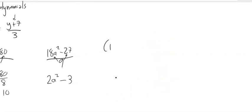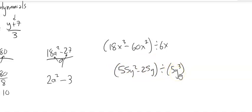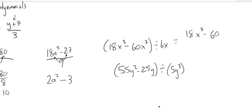Sometimes we'll write division with a division sign. Notice in both of these cases we're using parentheses — they're grouping the two terms together. So this whole thing is being divided by 6x, and this whole thing is being divided by 5y³. I'll write that as a fraction as well because it is the same thing. Both are saying the same thing — these are equivalent statements.